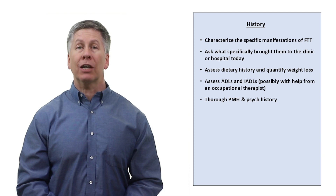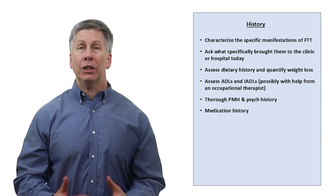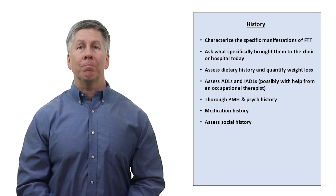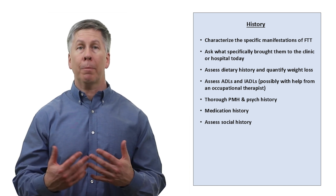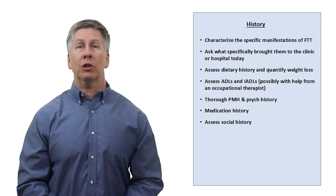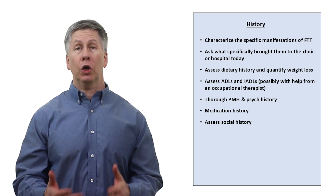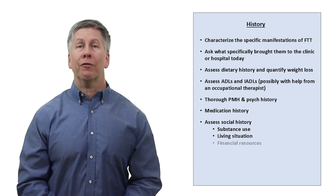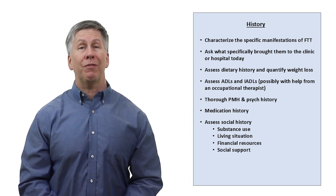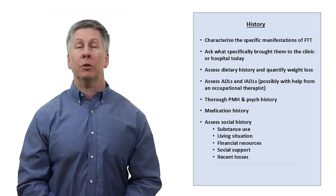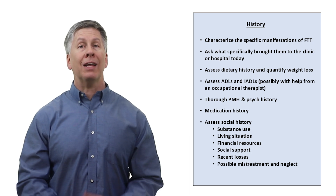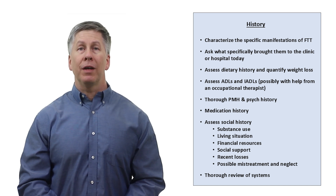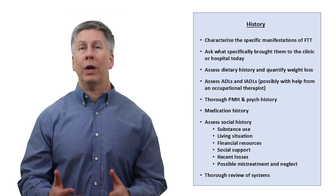Take a thorough medical and psychiatric history, and a thorough medication history. A detailed social history is important both to figure out the diagnosis and to establish how much support the patient has, and to start planning management — for example, figuring out if the patient is safe to return to their current environment. This includes substance use history, living situation, financial resources, social support, recent loss, and assessing whether there is possible mistreatment or neglect. Failure to thrive is one presentation in which a thorough, unfocused review of systems is actually valuable.